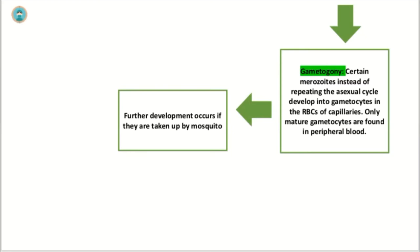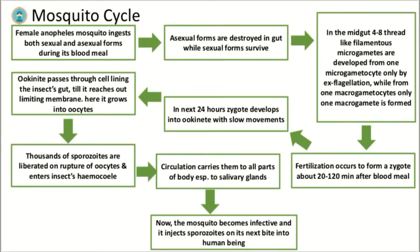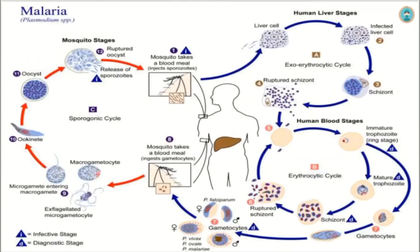The sexual cycle begins in human red blood cells where some merozoites develop into male and others into female gametocytes. Gametocyte-containing red blood cells are then ingested by a female Anopheles mosquito. The mosquito ingests both sexual and asexual forms; asexual forms are destroyed in the gut while sexual forms survive in the midgut. A female macrogamete and eight sperm-like male microgametes are formed; fertilization occurs 20 to 120 minutes after the blood meal. Within 24 hours, the zygote differentiates into a motile ookinete that burrows into the gut wall, growing into an oocyst within which many haploid sporozoites are produced. Sporozoites migrate to the salivary glands, ready to complete the cycle at the next blood meal.